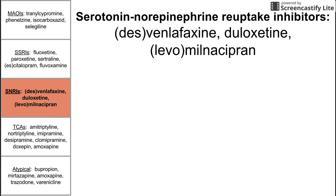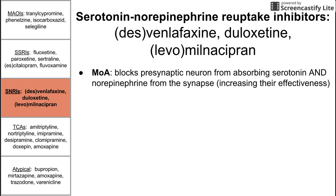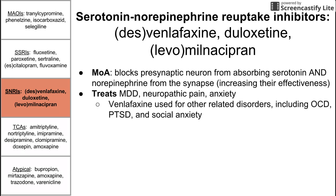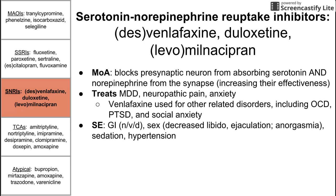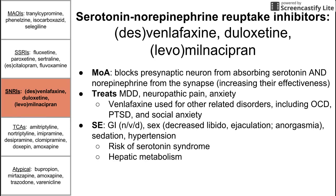Next we have the SNRIs — the serotonin-norepinephrine reuptake inhibitors. These include venlafaxine, desvenlafaxine, duloxetine, milnacipran, and levomilnacipran. Their mechanism is that they block presynaptic neurons from absorbing serotonin and norepinephrine from the synapses, increasing the effectiveness of both neurotransmitters — similar to SSRIs but with the additional blocking of norepinephrine reuptake. They treat major depressive disorder, neuropathic pain, and anxiety. Venlafaxine is specifically used for OCD, PTSD, and social anxiety. Side effects include the same GI and sexual side effects, plus sedation, hypertension, risk of serotonin syndrome, and hepatic metabolism.